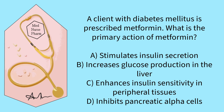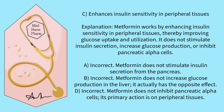A client with diabetes mellitus is prescribed metformin. What is the primary action of metformin? A) Stimulates insulin secretion? B) Increases glucose production in the liver? C) Enhances insulin sensitivity in peripheral tissues? D) Inhibits pancreatic alpha cells? Pause the video and select your answer. The correct answer is C.